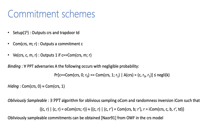Next, I will talk about commitment schemes in the CRS model. There are three algorithms: the setup algorithm generates the CRS and trapdoor TD; the commitment algorithm generates a commitment C to message M using randomness R; the verify algorithm decommits the commitment to check it. The commitment should satisfy binding and hiding properties. We also need oblivious sampleability, where an honestly generated commitment can be claimed to be generated obliviously by inverting the randomness. Obliviously sampleable commitments can be obtained from one-way functions.